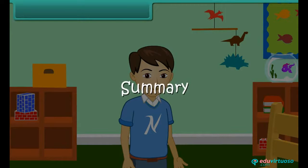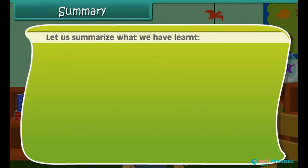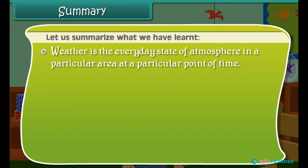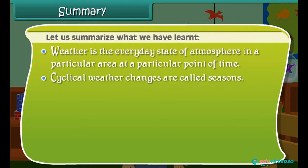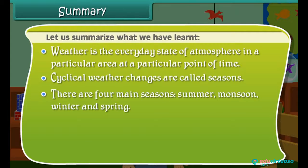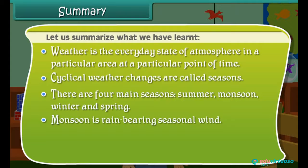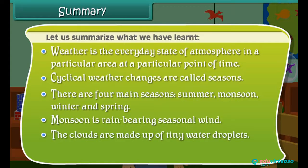Let us summarize what we have learned. Weather is the everyday state of atmosphere in a particular area at a particular point of time. Cyclical weather changes are called seasons. There are four main seasons: summer, monsoon, winter and spring. Monsoon is rain bearing seasonal wind. The clouds are made up of tiny water droplets. Wind is moving air.